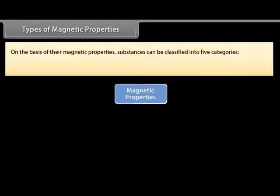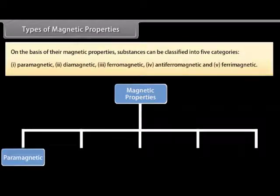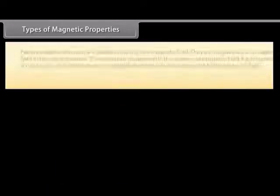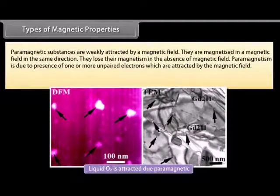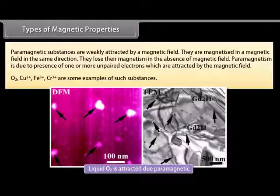On the basis of their magnetic properties, substances can be classified into 5 categories: paramagnetic, diamagnetic, ferromagnetic, antiferromagnetic, and ferrimagnetic. Paramagnetic substances are weakly attracted by a magnetic field. They are magnetized in the same direction in a magnetic field and lose their magnetism in the absence of a magnetic field. Paramagnetism is due to the presence of one or more unpaired electrons which are attracted by the magnetic field. O₂, Cu²⁺, Fe³⁺, and Cr³⁺ are some examples.